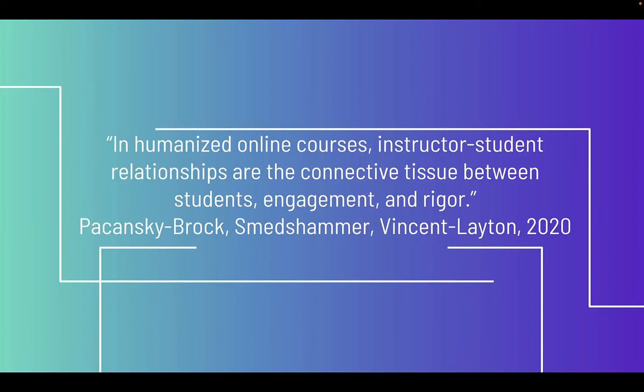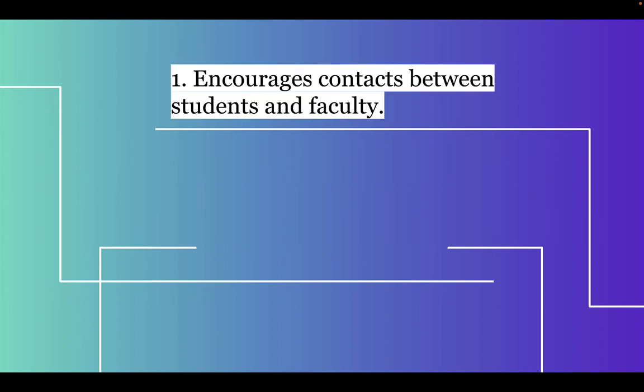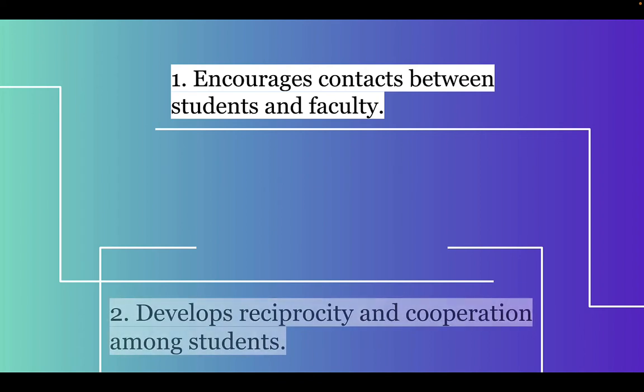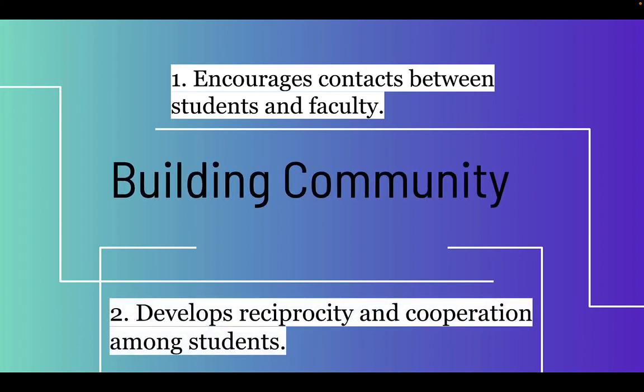In 1987, Chickering and Gamson developed their seven principles for good practice in undergraduate education. It starts with encouraging contact between students and faculty, develops reciprocity and cooperation among students, uses active learning techniques, gives prompt feedback, emphasizes time on task, communicates high expectations, and respects diverse talents and ways of learning. The first two principles are encouraging contact between students and faculty, and developing reciprocity and cooperation among students.